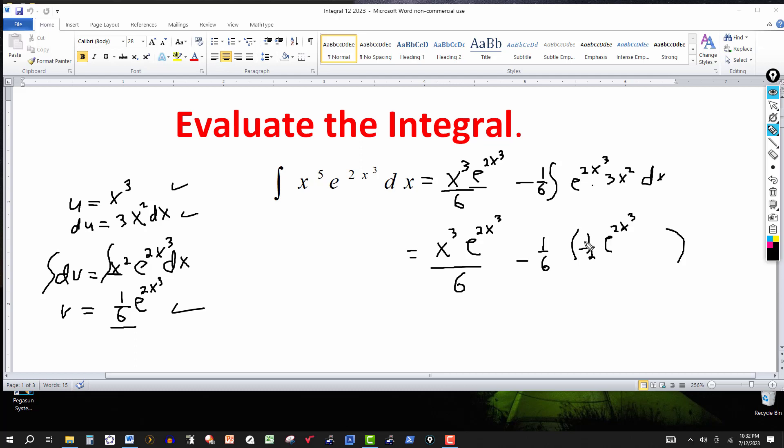The derivative of 1 half e to the 2x cubed will give me 6x squared times the 1 half will give me this coefficient right here. 6x squared times 1 half gives me this. So it checks that this here is the derivative of this integral here.